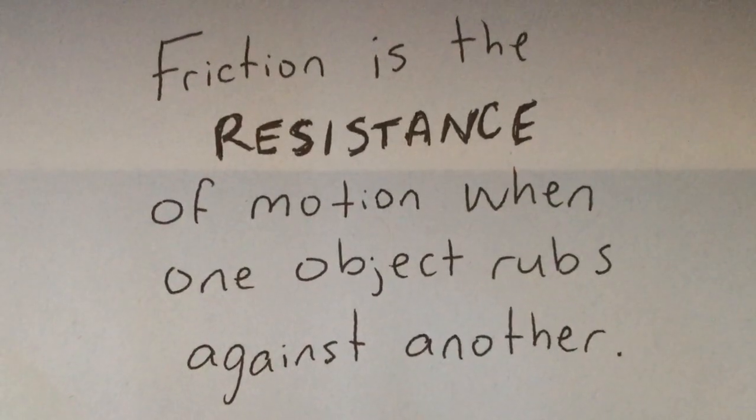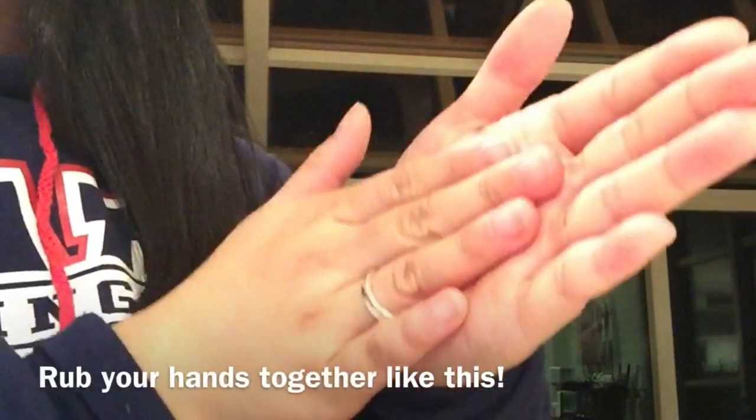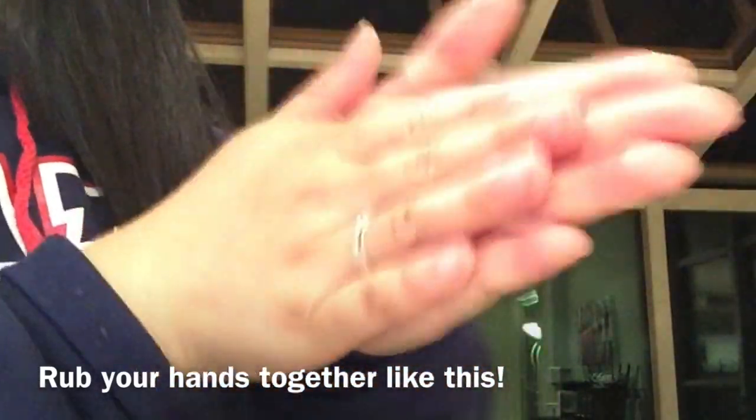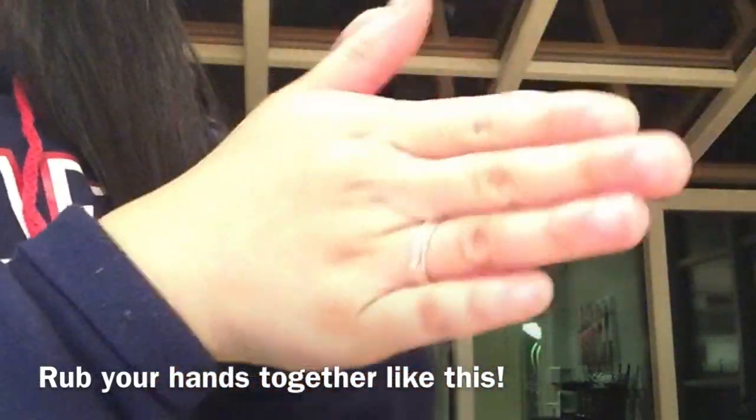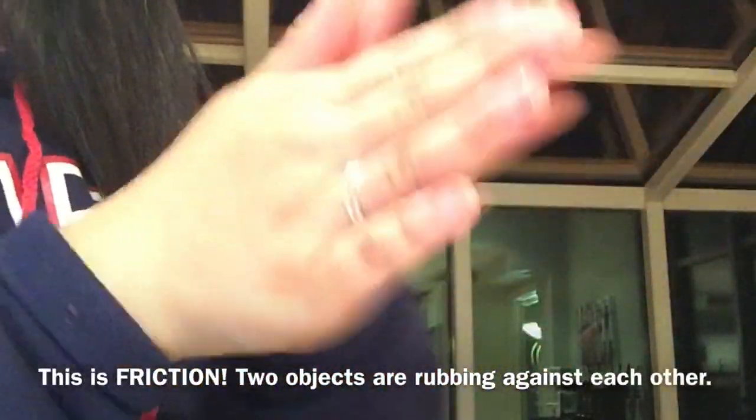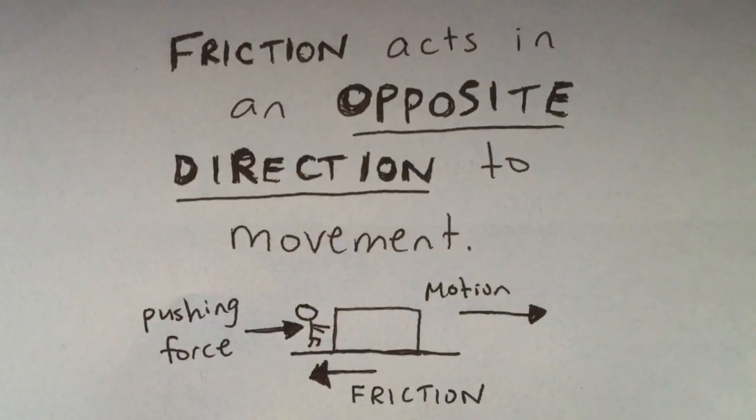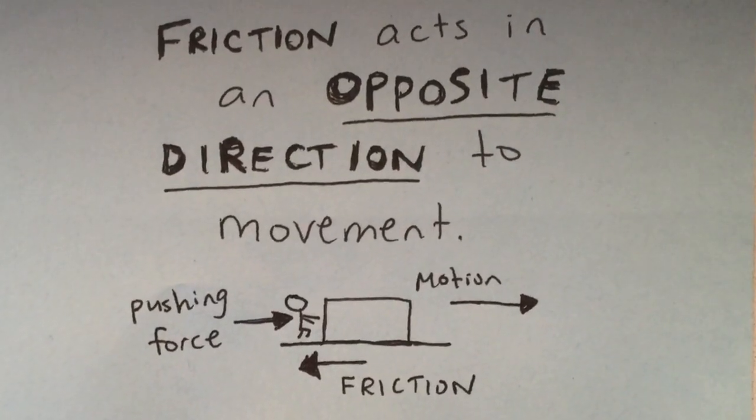Another example of a contact force is frictional force. Friction is the resistance of motion when one object rubs against another. Rub your hands together just like this. This is friction – two objects are rubbing against each other. Friction acts in an opposite direction to movement.